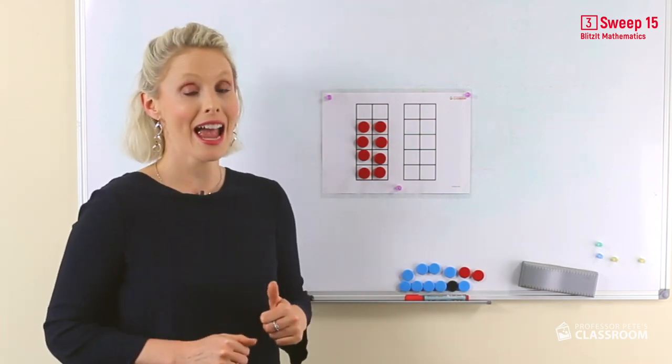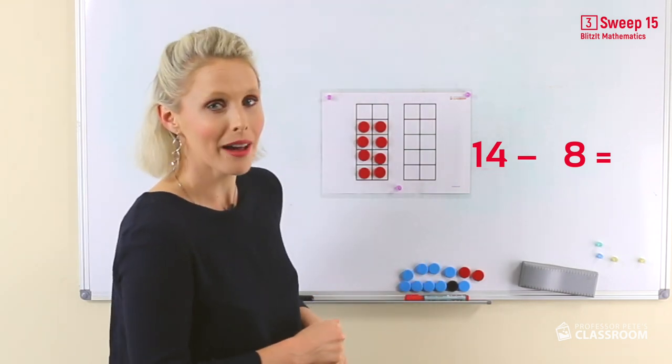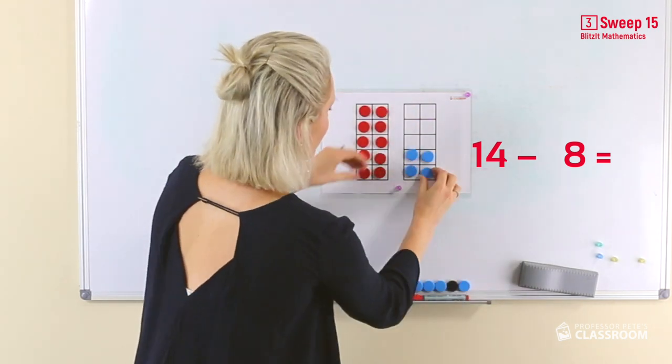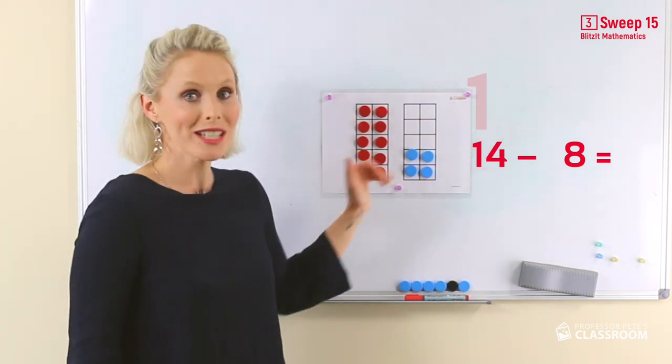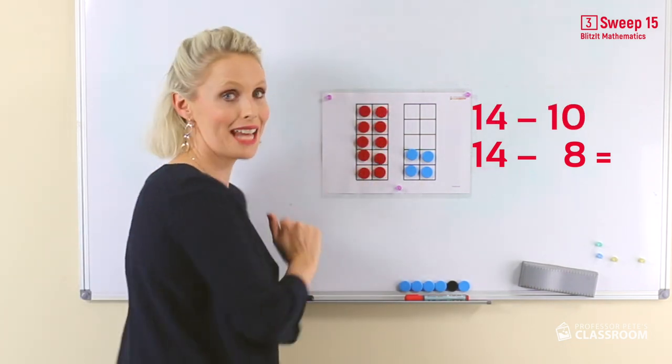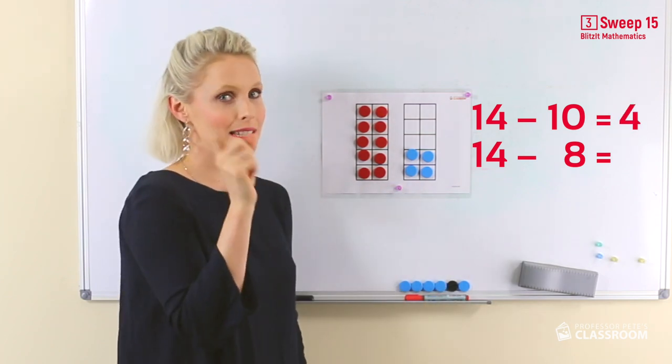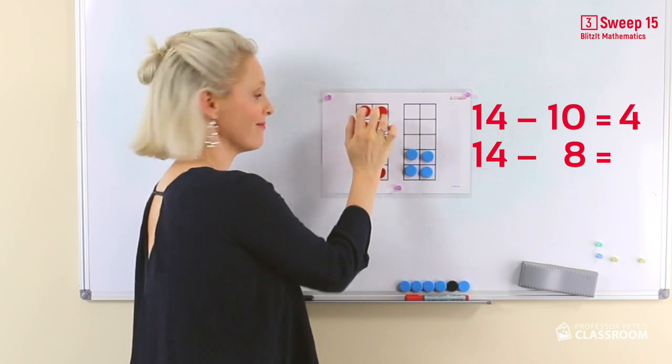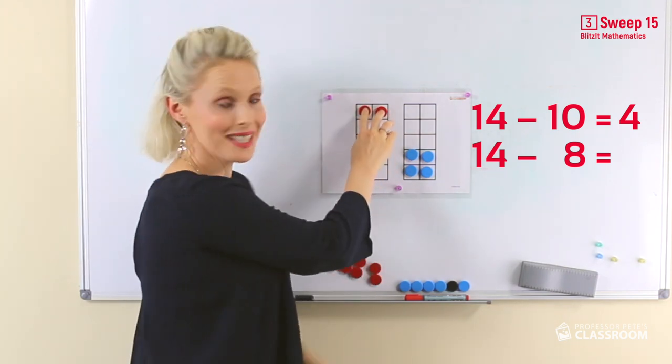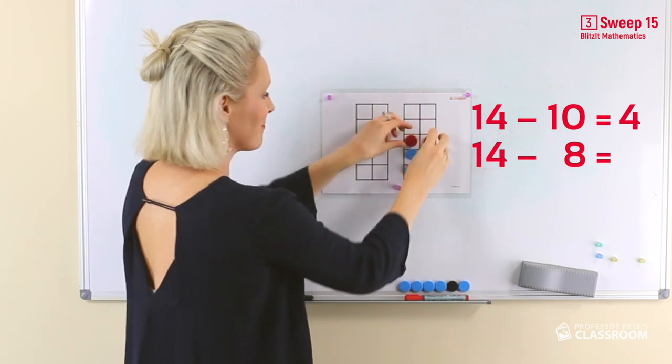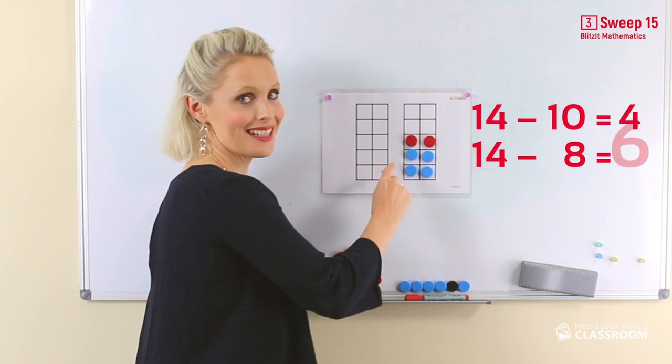Now let's have a look at 14 take away 8. Have a think about it. Now you know that 14 take away 10 equals 4. Remember it's less two. Here's our less two. 14 take away 8 is 6.